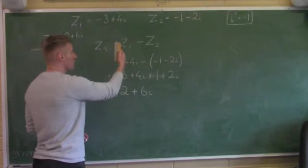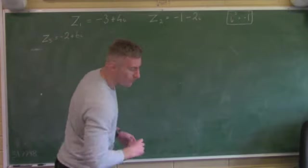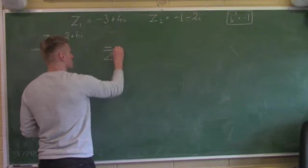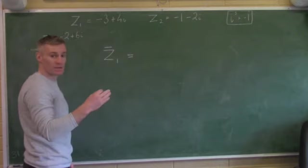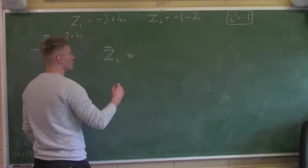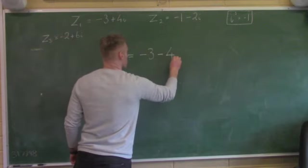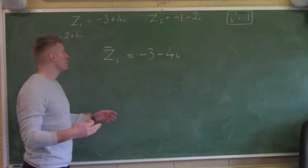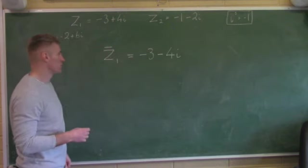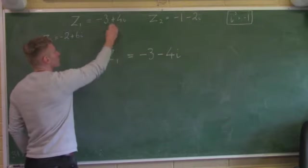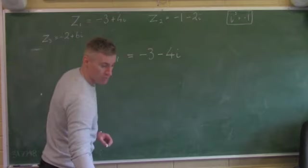They're testing me there on adding and subtracting complex numbers. Part 2, they're going to ask me for the conjugate of Z1 — there's a little line over it. Very simple: all we're doing is changing the sign of the imaginary part. So it stays as minus 3, but changes to minus 4i. Where students fall down is not remembering what the conjugate means.